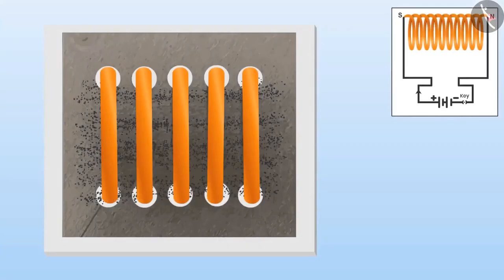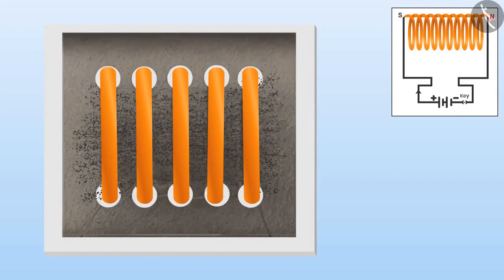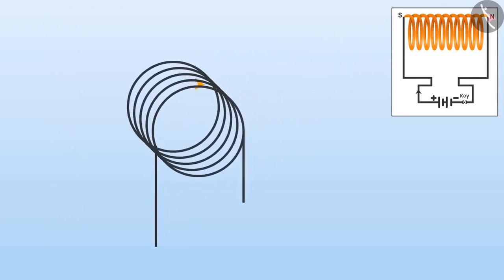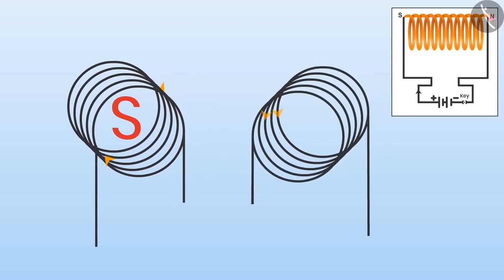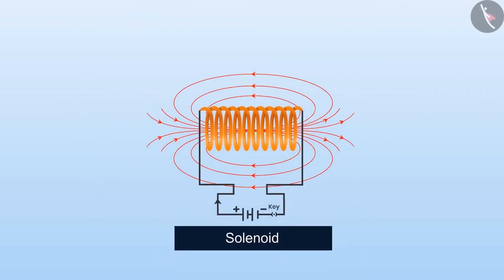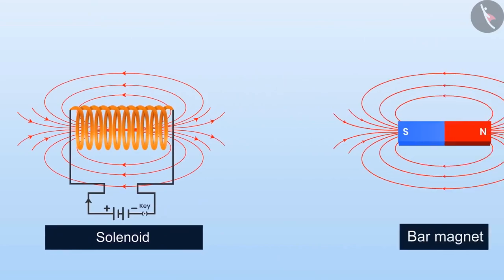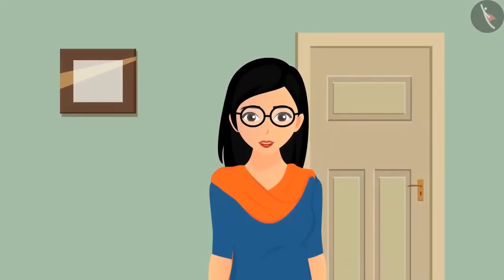If we apply electricity through the solenoid, iron filings will make a pattern here too, meaning there are magnetic fields present. To find the direction of the field lines, we look at the direction of current at both sides. On the side where current flows in a clockwise direction, that is the south pole of the solenoid. On the side where current flows in an anti-clockwise direction, that is the north pole. Looking closely at the image, it resembles the field pattern of a bar magnet.